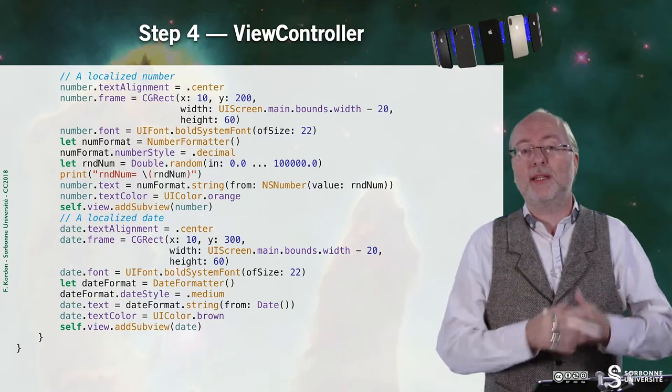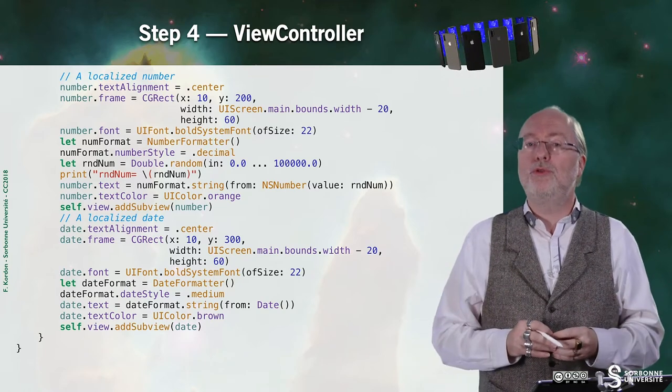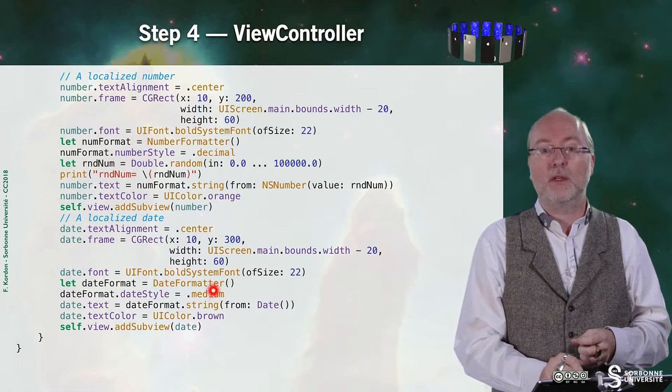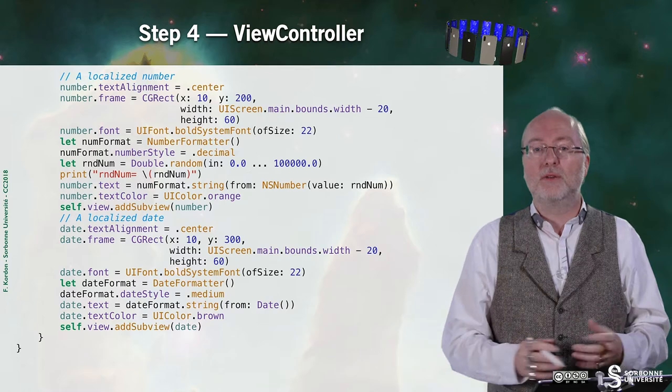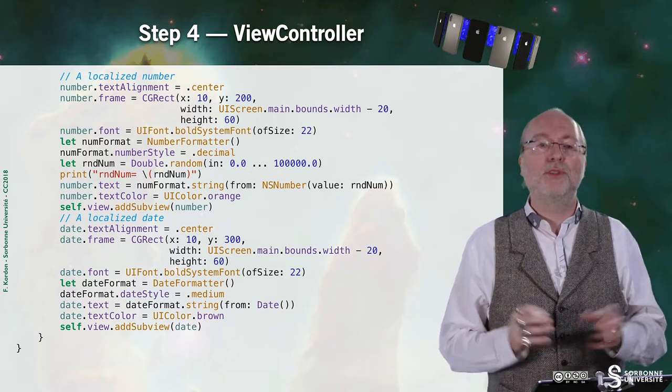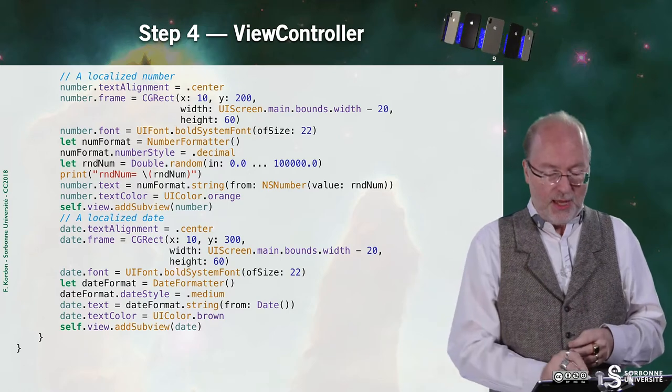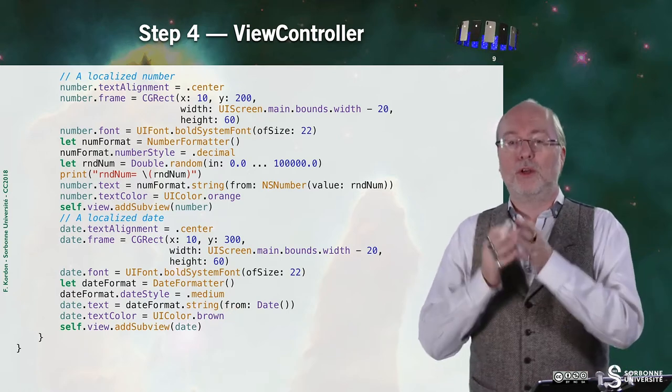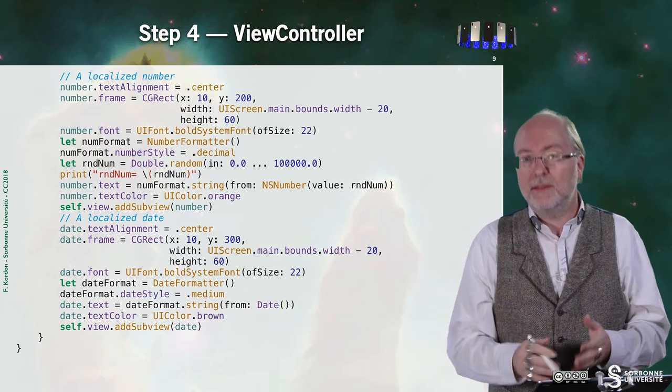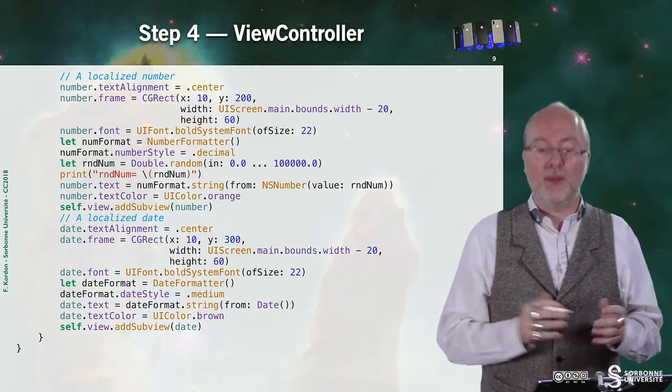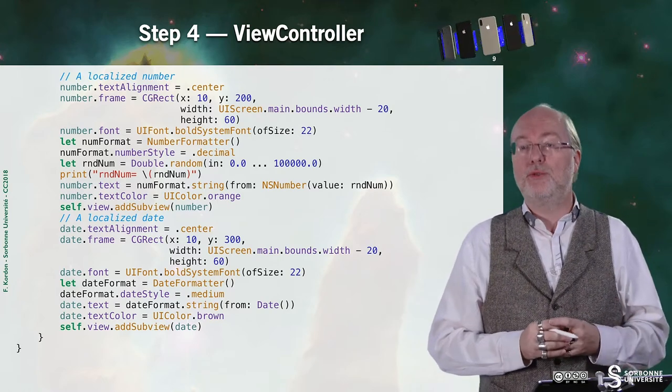And this is the same with the date. You see that I retrieve a date as I already show you in another video. Here, I also have a date formatter. I define a style. Here, .medium. You can have a look at the Fantastic Manual to see what are the possibilities. And I use this formatter to transform a date, which is the current date, in fact, right now, into a string that then will be displayed to the label.